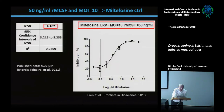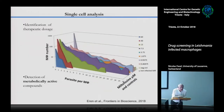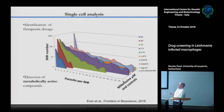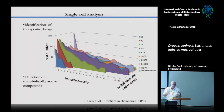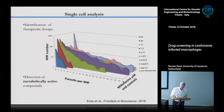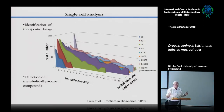The readout includes the number of amastigotes per macrophage and the number of macrophages without parasites. The system can be used for drugs or any supplement. You measure the number of macrophages, the number of parasites per macrophage, and curve-fit the results. We used the conditions defined by our amphotericin B and miltefosine controls, including the quantity of M-CSF, with a solid QC process to ensure correctness.